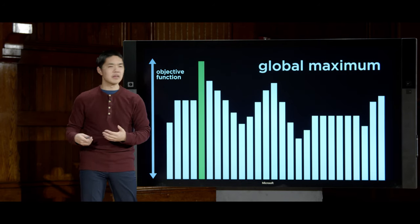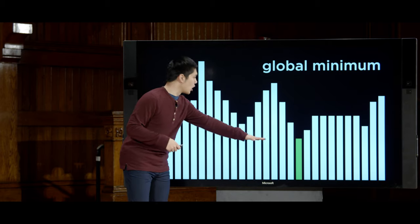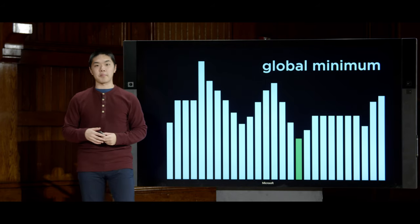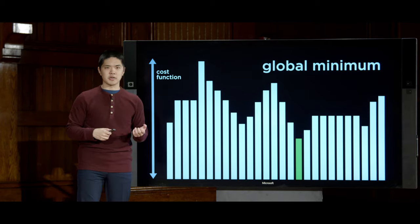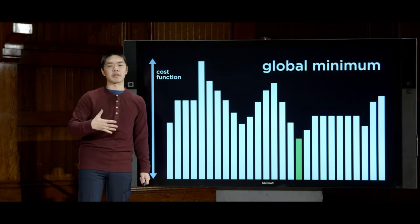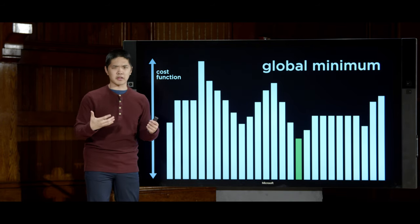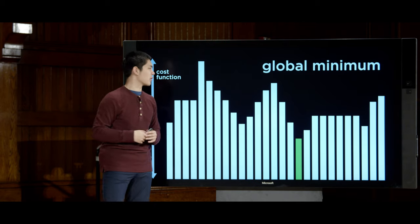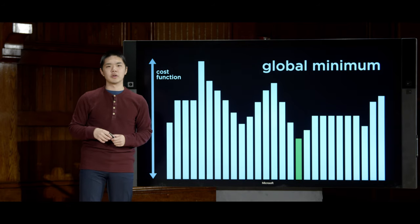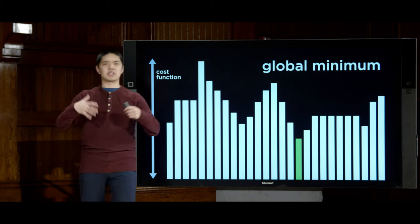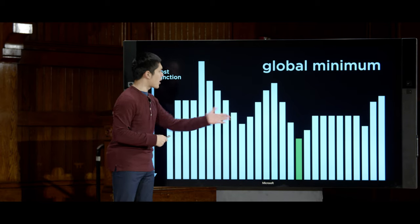An equivalent but reversed problem is finding a global minimum — a state with a value lower than all other possible values. When trying to find a global minimum, we call the function a cost function. Each state has some cost: monetary, time, or in the case of houses and hospitals, a distance cost. We're trying to find the state with the lowest possible value of that cost.